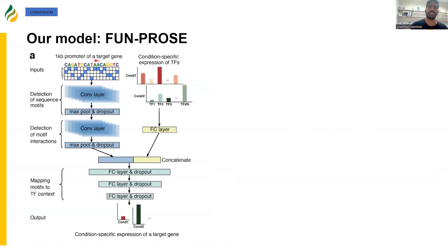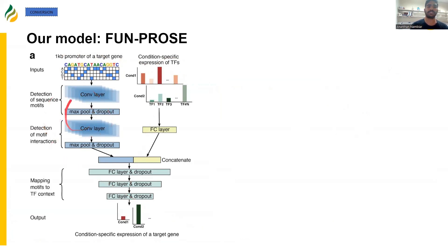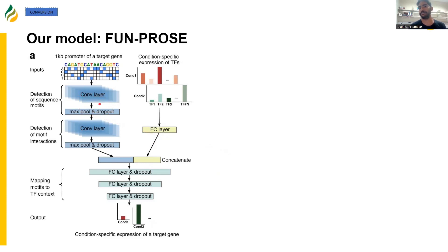So in our paper, what we do is we take just the promoter sequence of target genes and condition-specific expression of transcription factors to predict the condition-specific expression of target genes. We use convolutional layers to extract sequence motifs from our promoter sequences, and we combine this information with information extracted from transcription factors to make our predictions.